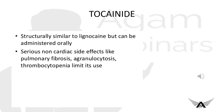Tocainide is also structurally similar to lignocaine but can be administered orally, unlike lignocaine which is IV only for ventricular arrhythmias. It has serious non-cardiac side effects like pulmonary fibrosis, agranulocytosis, and thrombocytopenia, which limits its use.